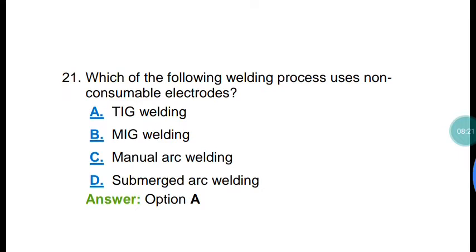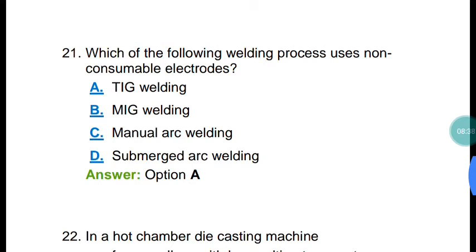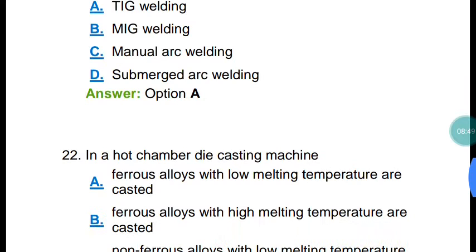Question number twenty-one: which of the following welding processes uses non-consumable electrodes? This question appears repeatedly in GATE, IES, and ISRO exam papers. The welding process that uses non-consumable electrodes is TIG welding — Tungsten Inert Gas welding.